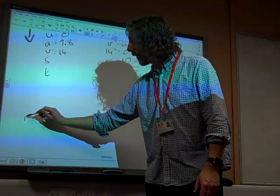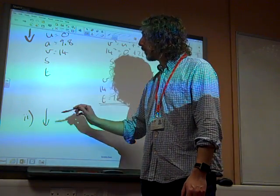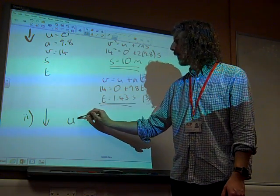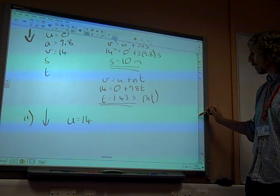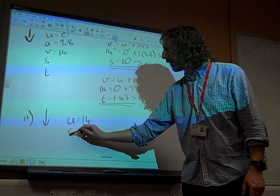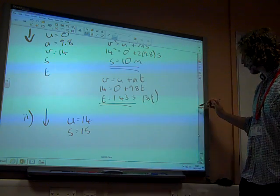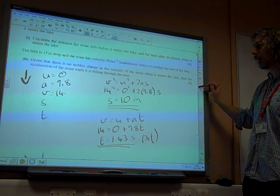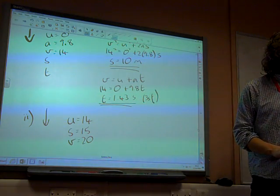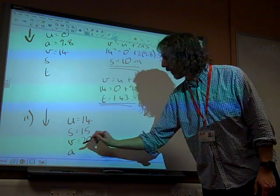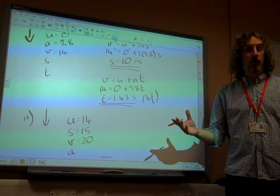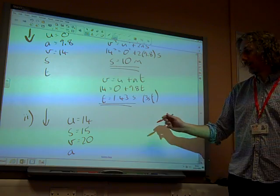So in part two, we're going to continue to take downwards as being positive. But we've now got an initial velocity of 14, the speed with which it enters the lake. We've got the stone falling a distance of 15 metres. We've got it with a final velocity of 20. And the question wants us to find the acceleration as it falls through the lake. Because, of course, it's not accelerated due to gravity now. It's in the water. So we've got a different acceleration.